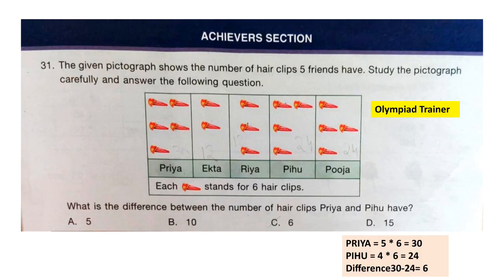Here is the Achievers section. Each question in the Achievers section carries 2 marks. Question 31: The given pictograph shows the number of hair clips 5 friends have. Each clip symbol stands for 6 hair clips. What is the difference between the number of hair clips Priya and Pihu have? Priya has 5 clips, so 5 × 6 = 30 hair clips. Pihu has 4 clips, so 4 × 6 = 24 hair clips. The difference is 30 − 24 = 6. The correct answer is option C: 6.